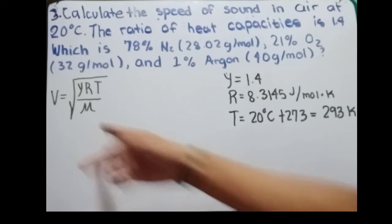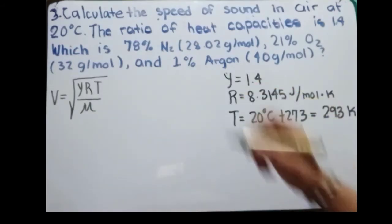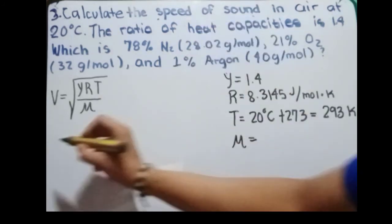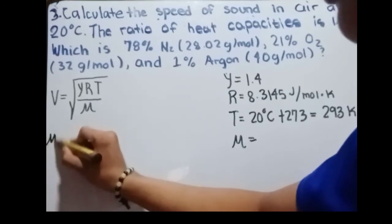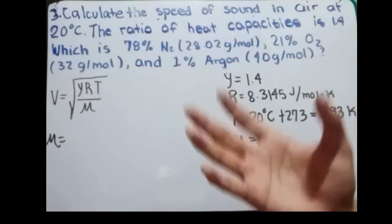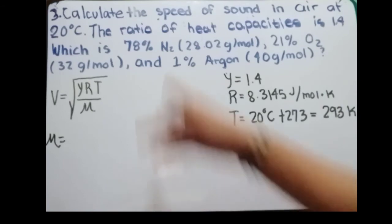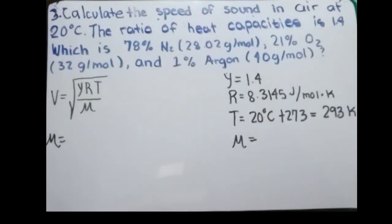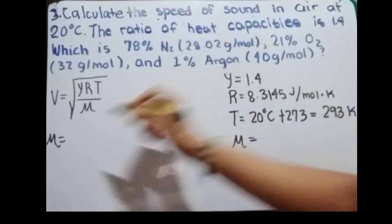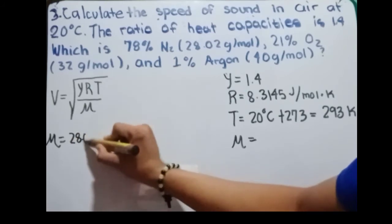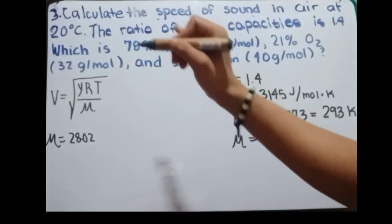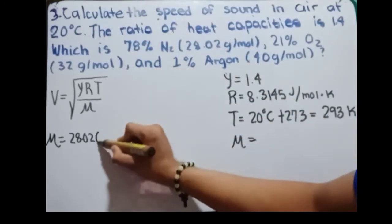Now we are looking for the average molar mass. To compute it: nitrogen is 14.01 grams per mole, but since it is nitrogen gas we multiply by two to get 28.02 grams per mole. Since nitrogen gas is 78%, we multiply by 0.78.